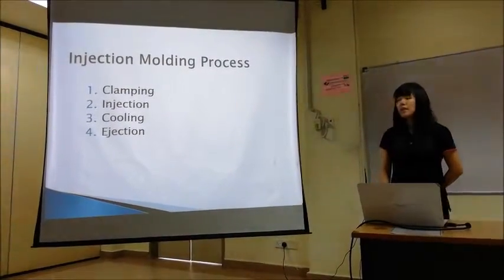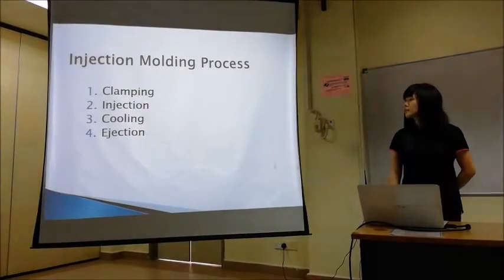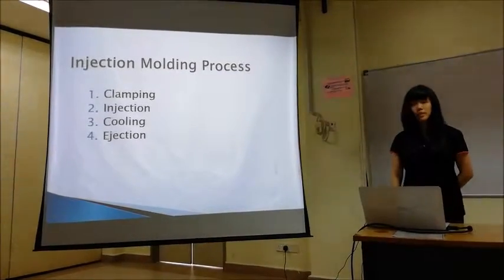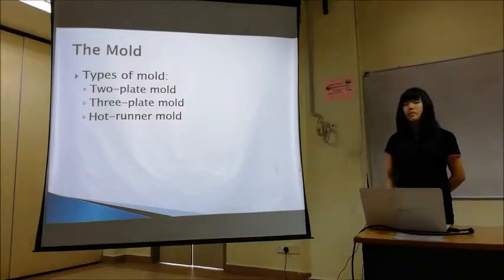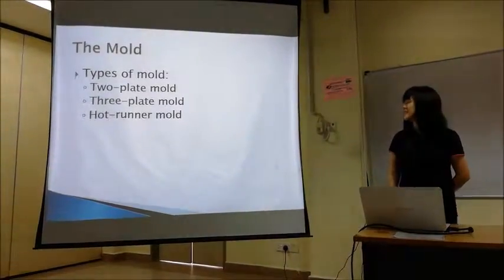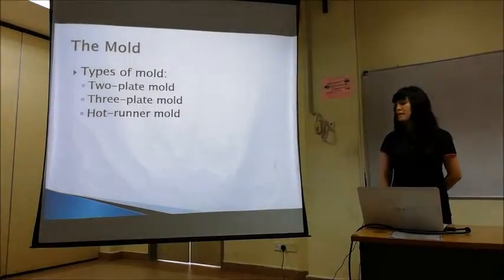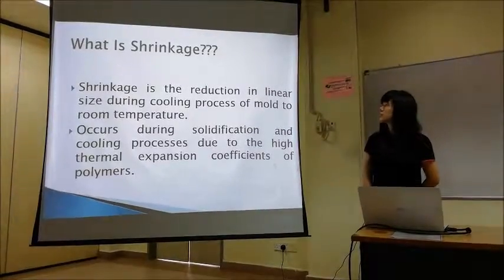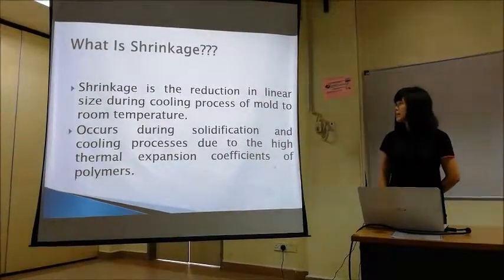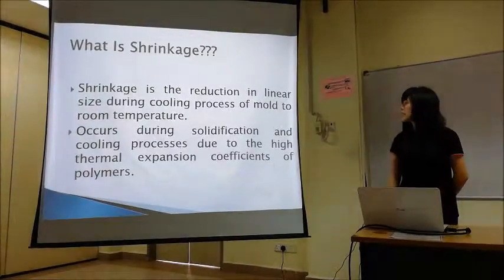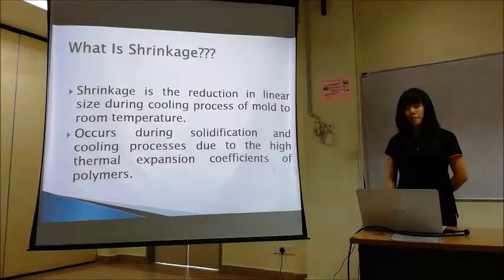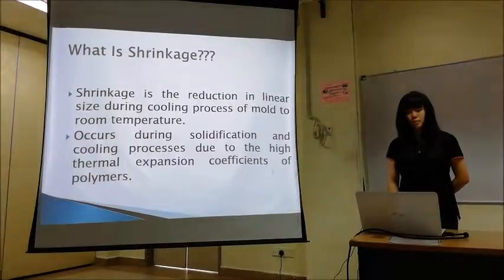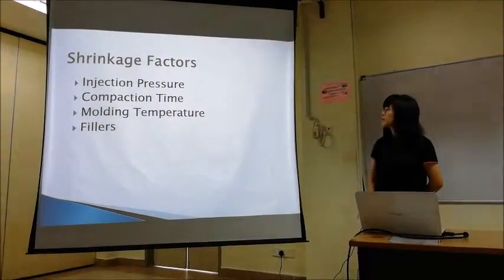The injection molding process is carried out in four general steps: the clamping process, the injection molding process, the cooling process, and the ejection process. There are several types of molds used: two-plate mold, three-plate mold, and hot runner mold. In the injection molding process, a problem called shrinkage occurs. Shrinkage is the reduction in linear size during the process of mold cooling to room temperature, and it occurs due to the thermal expansion coefficient of polymers.